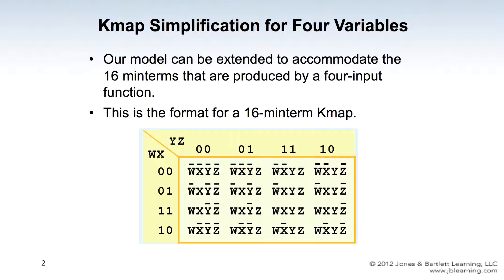In this video I want to talk about KMAP simplification for four variables. The KMAP is going to be bigger than the scenario of two and three variables. The four-input boolean function has the KMAP represented in the diagram shown below. We assume two pairs of input variables: WX and YZ. WX are combined together, represented by the columns.